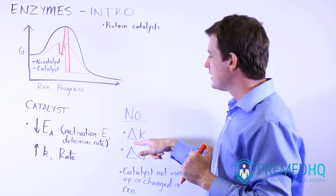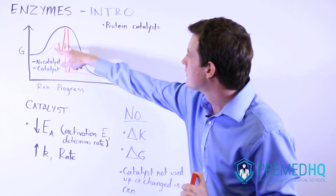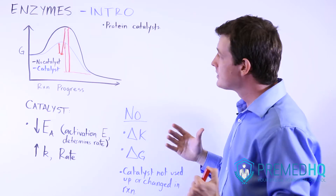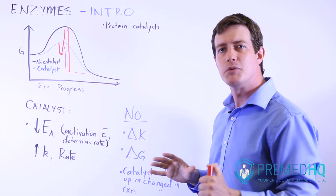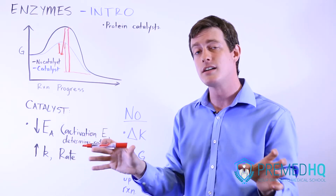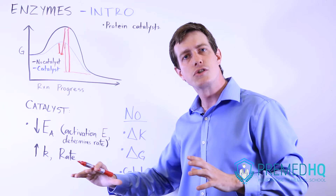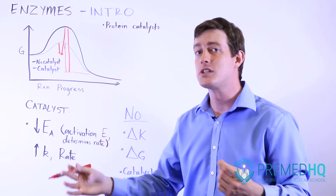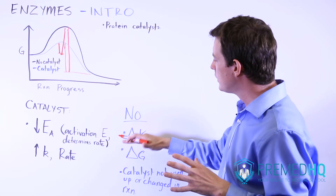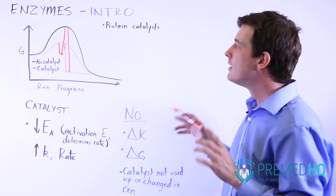What enzymes don't do is change the equilibrium constant or equilibrium position. Yes, the forward reaction moves more quickly, but so does the reverse reaction. Equilibrium is defined by two things: the concentration of reactants and products being constant, and the rate of the forward reaction equaling the rate of the reverse reaction. Because of that, the position of equilibrium and the concentration of reactants and products at equilibrium will not be changed by a catalyst.